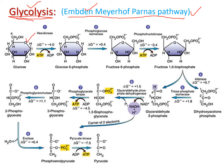The first step is a phosphorylation reaction. Phosphorylation means the addition of a phosphate group. Glucose is converted to glucose-6-phosphate — one phosphate group is attached at the sixth carbon of the glucose molecule, which is why we call it glucose-6-phosphate. The enzyme used for this reaction is hexokinase.